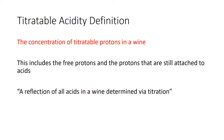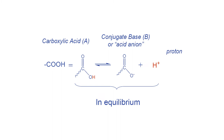Titratable acidity is the concentration of titratable protons in a wine. This includes the free protons and the protons that are still attached to the acid skeletons. I would say it's a reflection of all acids in a wine determined via titration. Here's a diagram: titratable acidity shows us all the acids in the wine — the protons still attached to the skeleton of the organic acid and the free ones floating around.